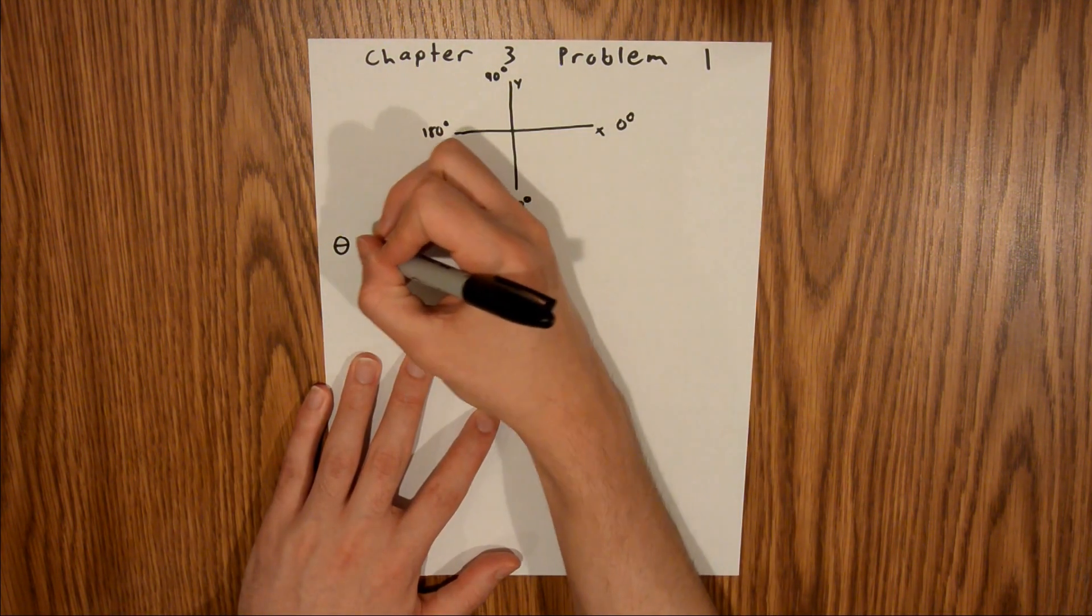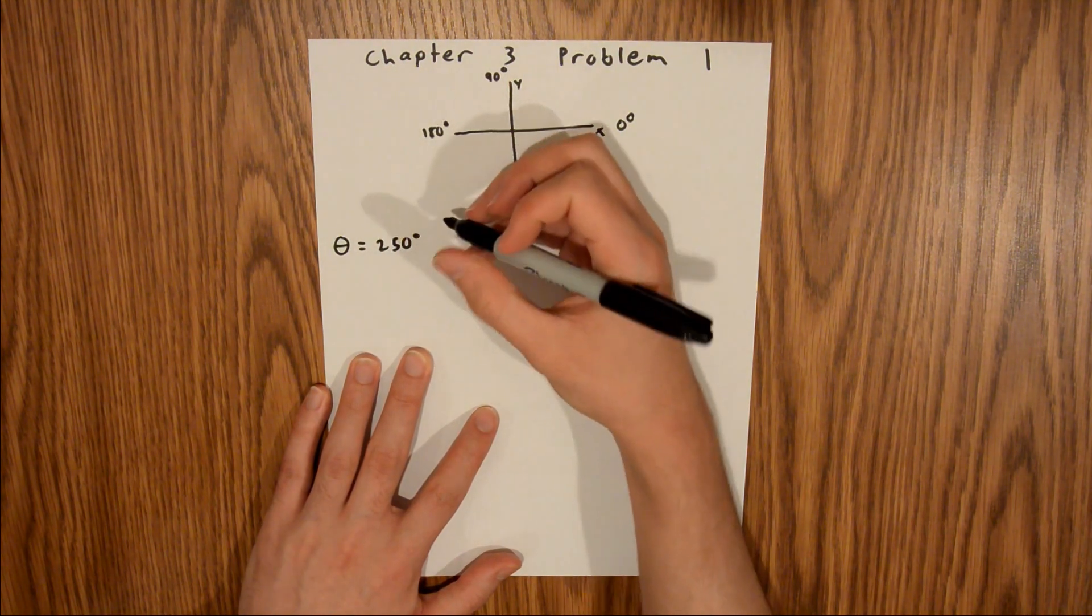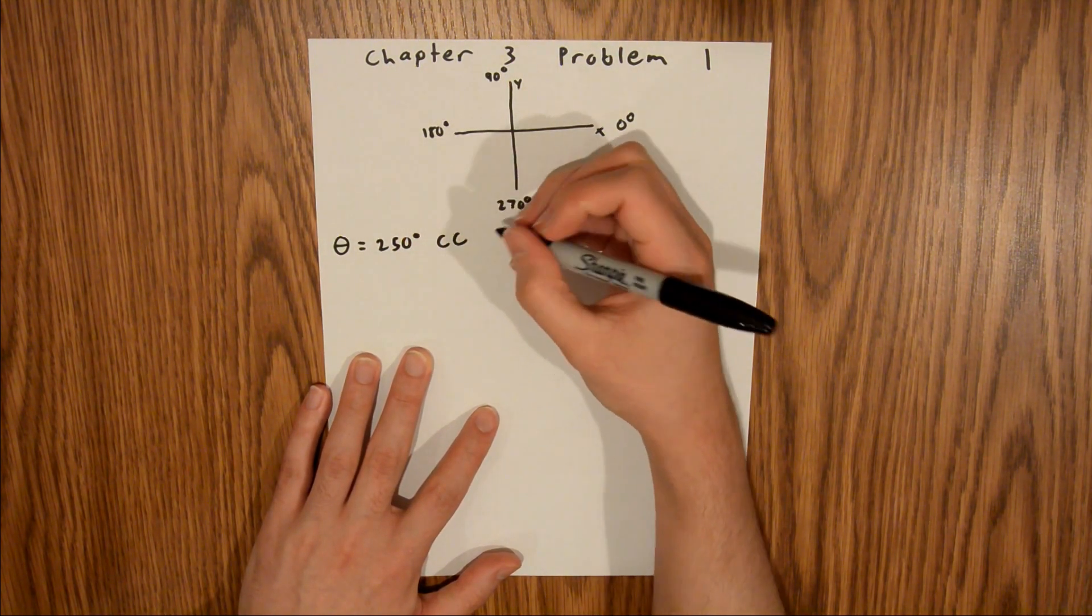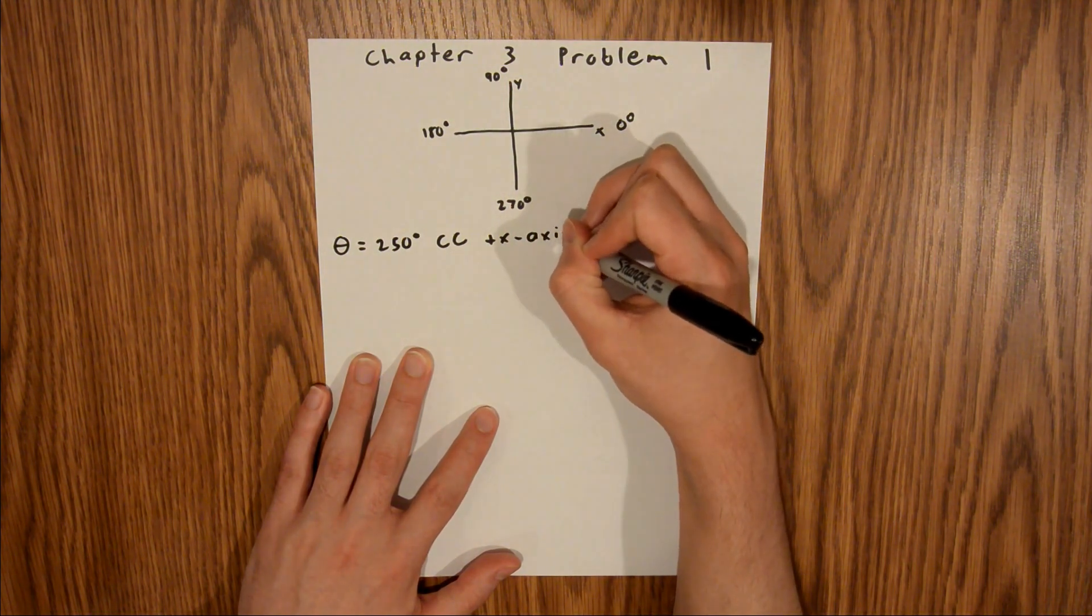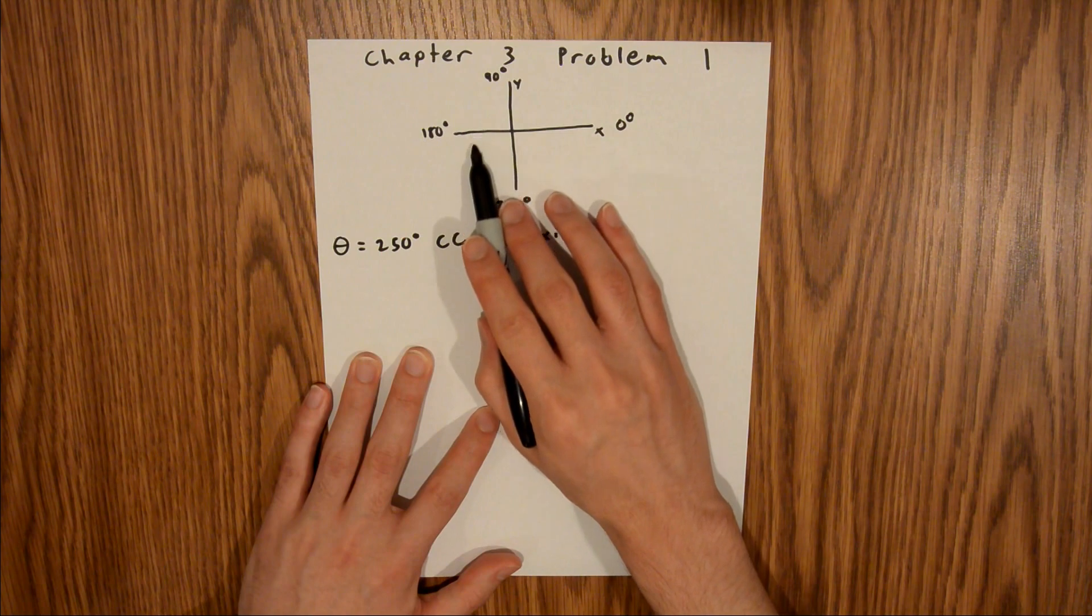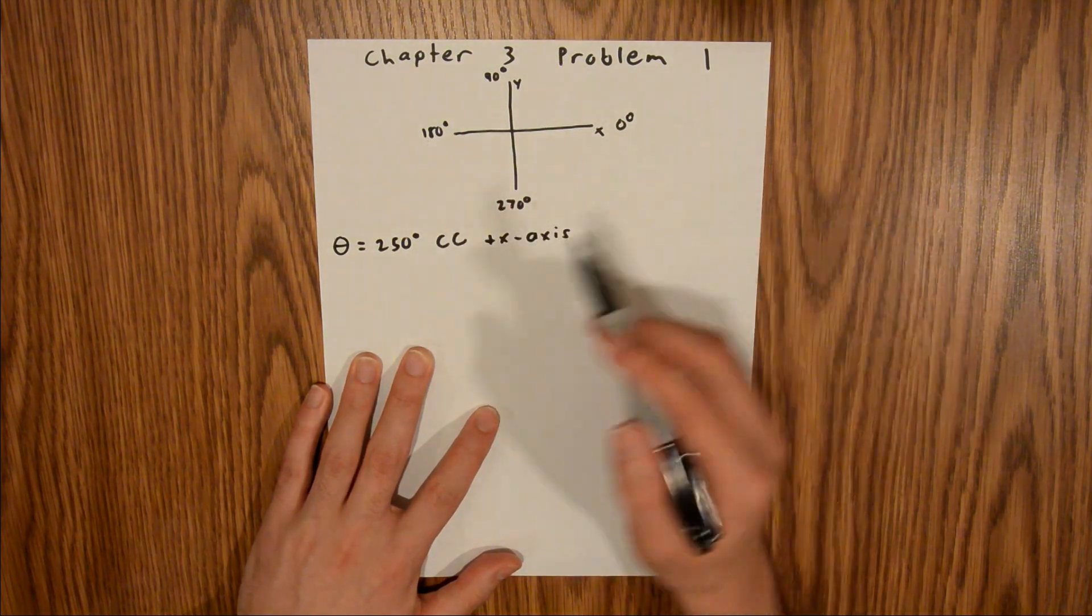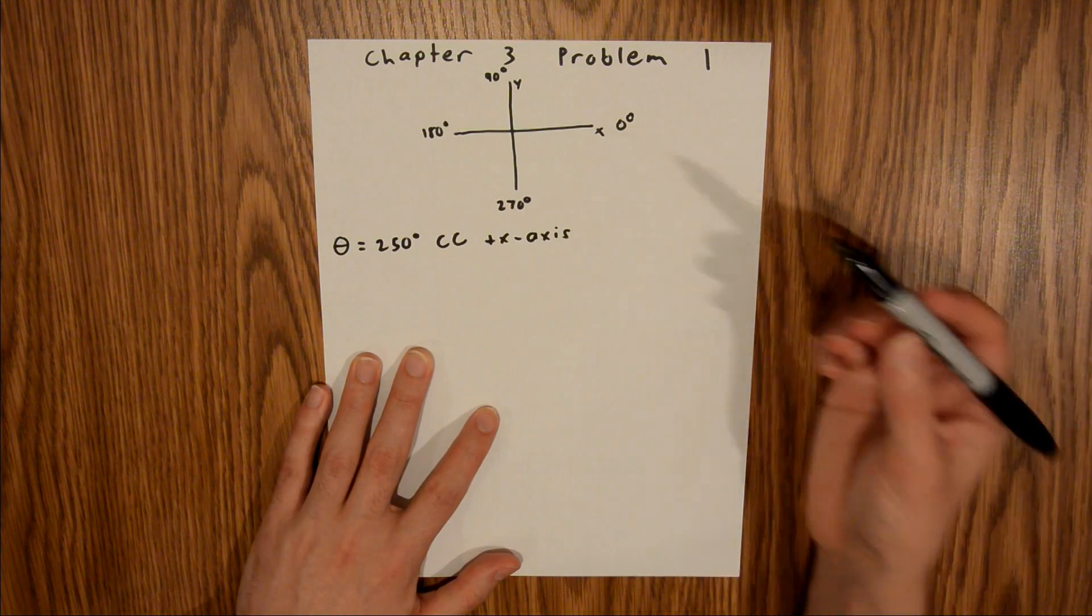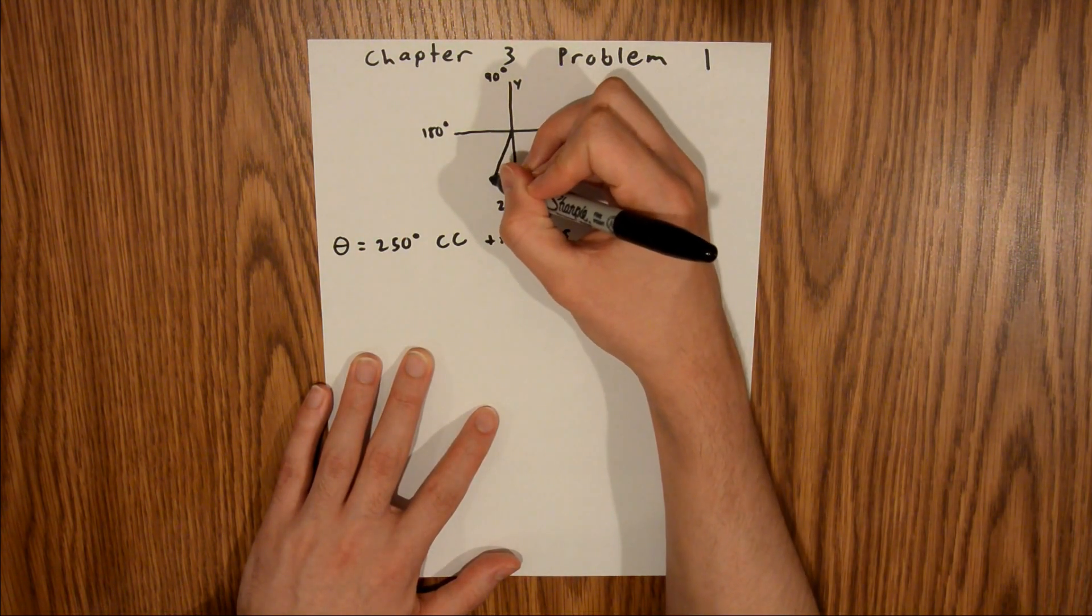And so we are told that theta is equal to 250 degrees counterclockwise from the positive x axis. So that would mean 250 degrees this way. And since this is 270, and this is 180, we know that our vector must be somewhere in between there, closer to 270. So I will just draw it about right there.